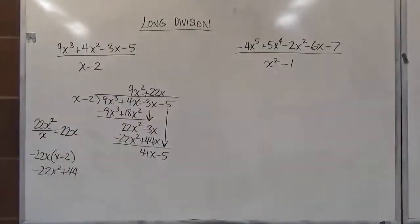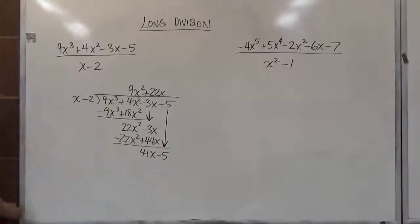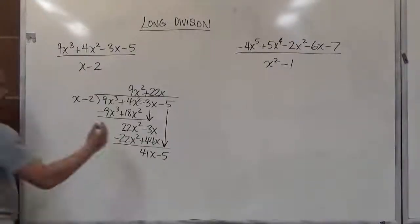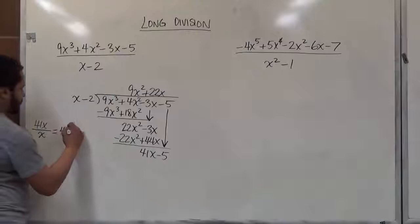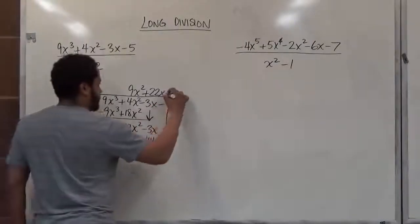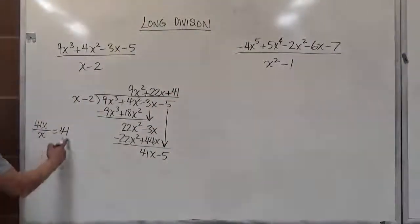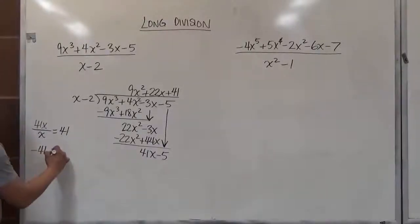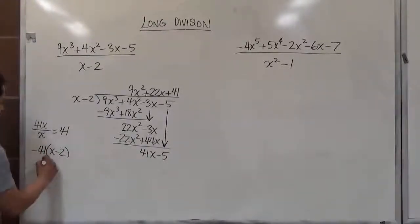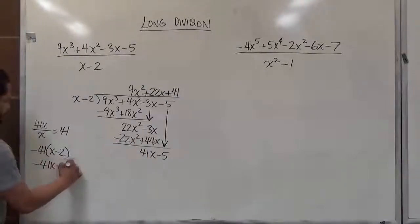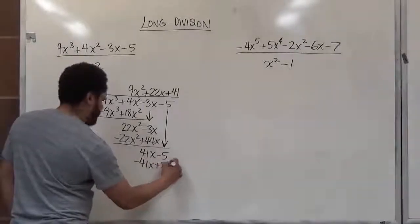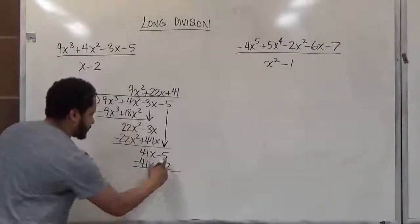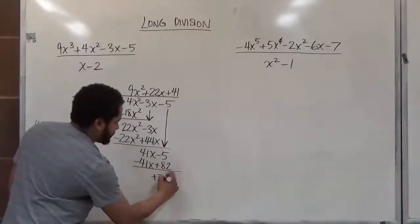We divide, multiply, and subtract again. 41x divided by x gives us 41, which is positive, so we put plus 41 on top. We take the opposite, negative 41, and multiply by the divisor, giving us negative 41x plus 82. We add that here: negative 41x plus 82. These two cancel, and the last two add to give us positive 77.